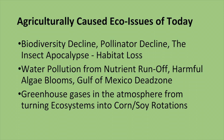Native plant agriculture is all about turning agriculturally caused issues into agricultural solutions. A few issues caused by agriculture today include biodiversity decline, pollinator decline, the insect apocalypse from habitat loss, water pollution from nutrient runoff, harmful algae blooms, and the Gulf of Mexico dead zone. A large proportion of greenhouse gases in the atmosphere and oceans come from turning these ecosystems into corn, soy, wheat, alfalfa rotations, cotton rotations, and overgrazed pasture.